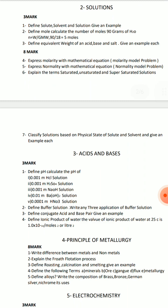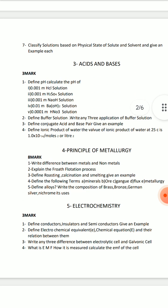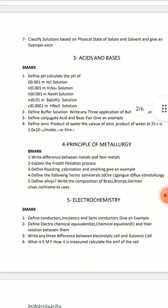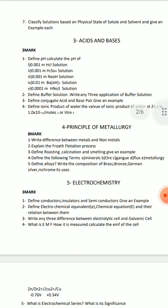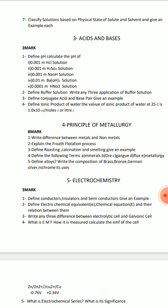Unit 3 is acids and bases. pH and pOH carry 3 marks. So basically pH is prepared for you. Short answer questions of 3 marks are related to acids and bases. There are 3 theories: Arrhenius theory, Bronsted-Lowry theory, and Lewis theory. We have to prepare all 3 theories. Bronsted-Lowry theory is a very important topic.